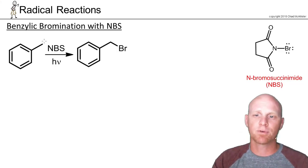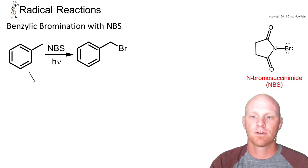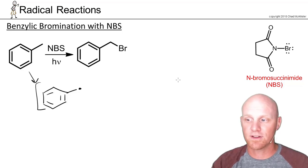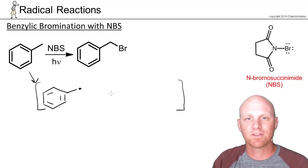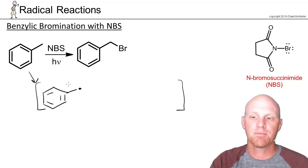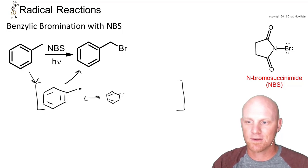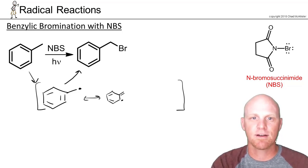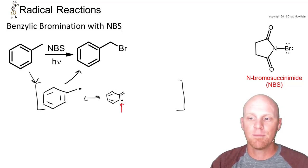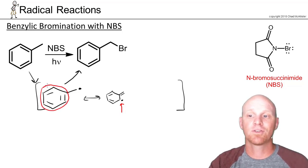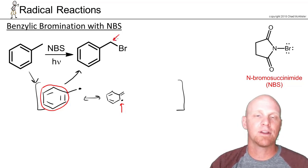Now if we take a look at benzylic bromination with NBS, worrying about resonance is not as big a deal. We can still form a resonance-stabilized radical, and this would actually have a bunch of resonance structures. But we don't have to worry too much about the other resonance structures, because you're only going to get one product. You'd never have to worry about the bromine ending up in the ring itself, because you'd end up with a product that is no longer aromatic. Aromaticity of the benzene ring takes precedence, so substitution always happens on the benzylic carbon.